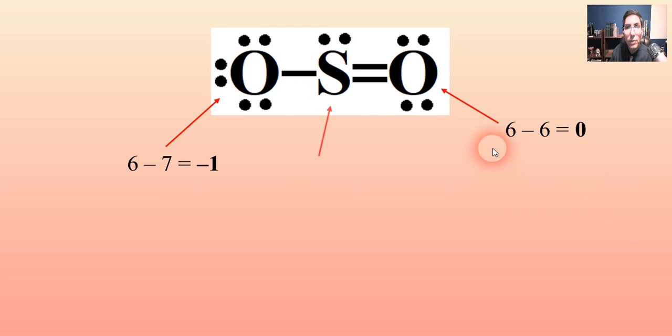Now sulfur, let's try the one in the middle there. Sulfur has 6. And how many does it have? There's 1 for that bond, 2 for that other bond, 3, 4, and 5. So 6 minus 5 is actually a positive 1.